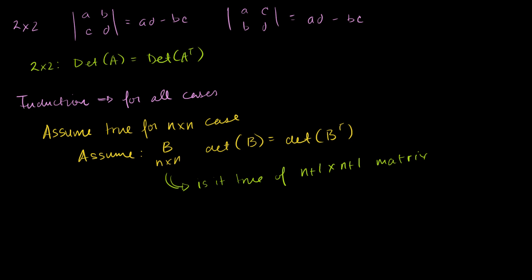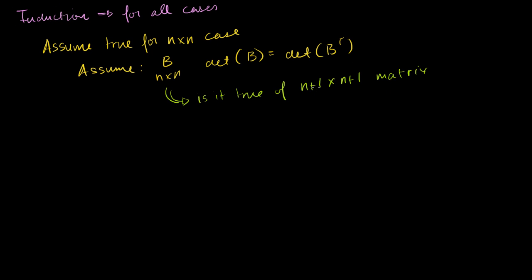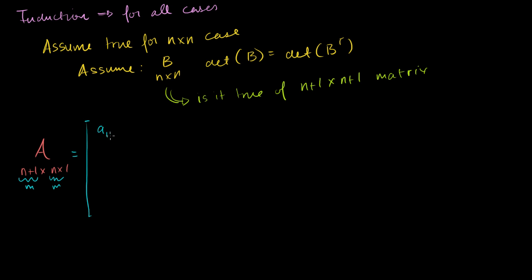So let's see if this is the case. Let me construct an n+1 by n+1 matrix. Let's say I have my matrix A, and it's an n+1 by n+1 matrix. To simplify notation, let's say m equals n+1, so we could call it an m×m matrix. Let me draw its entries. It's going to have: first row A₁₁, A₁₂, all the way to A₁ₘ. We have m columns, which is the same as n+1.